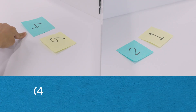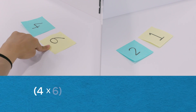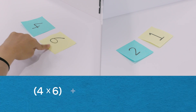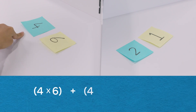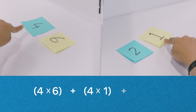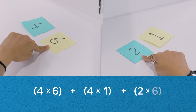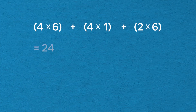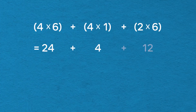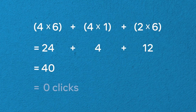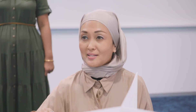I'm done. I'll go next: blue left times yellow left, plus blue left times yellow right, plus blue right times yellow left. I'm done as well.